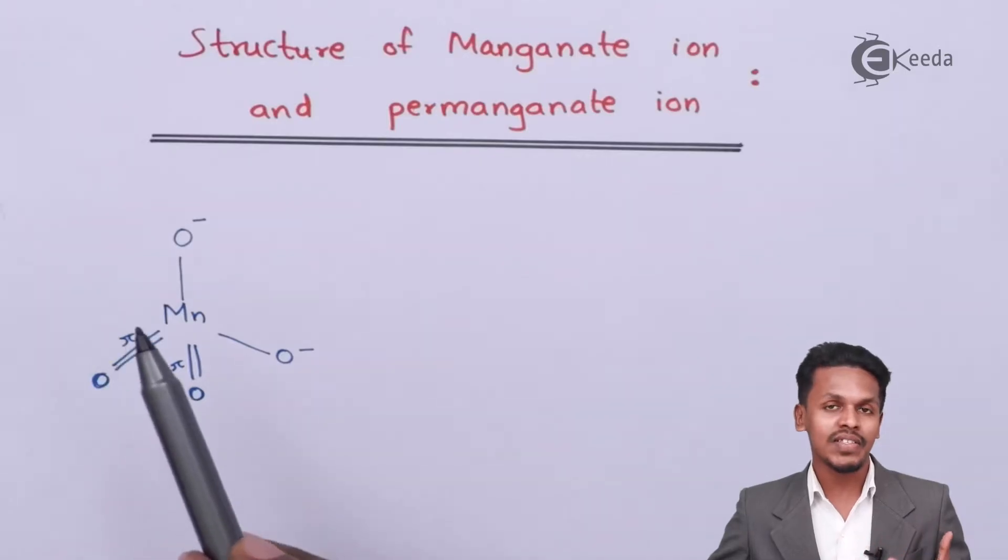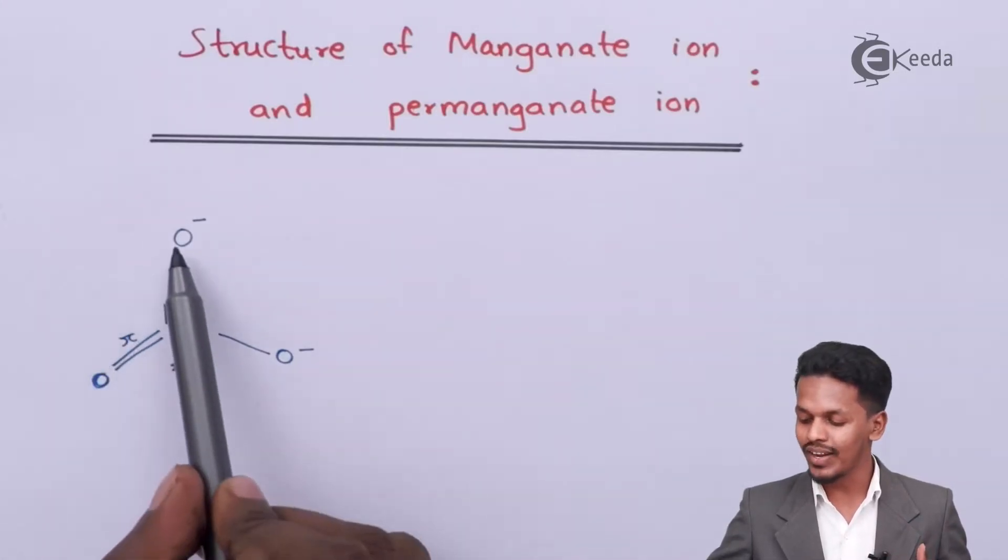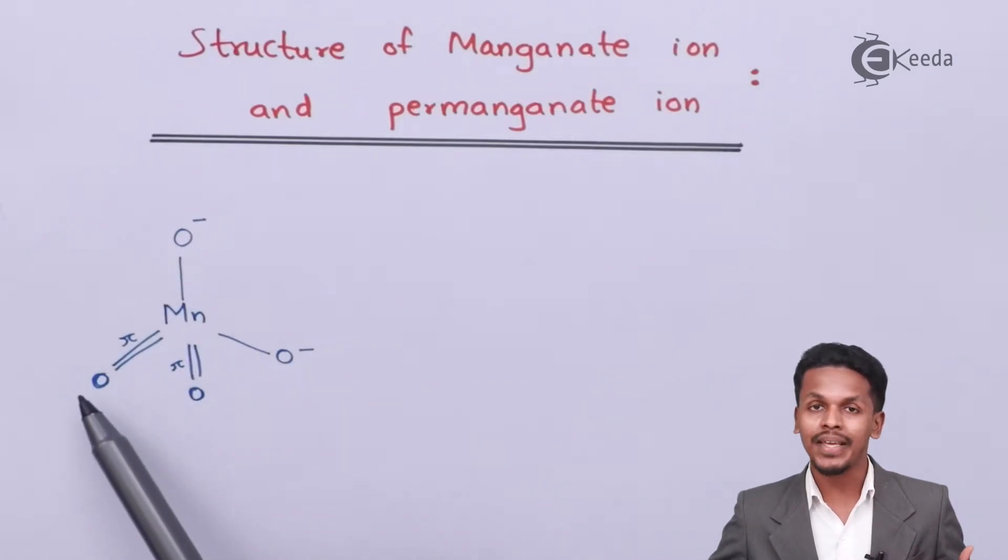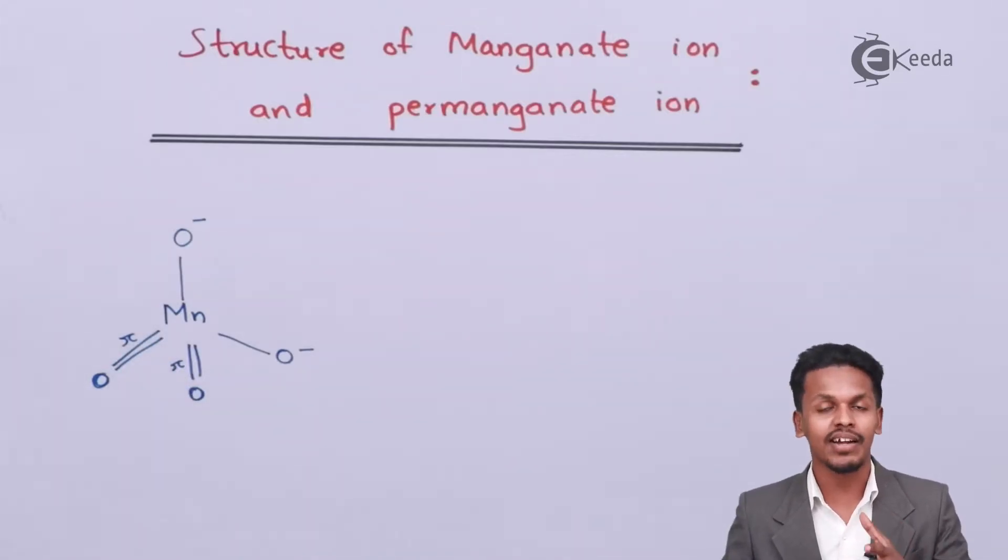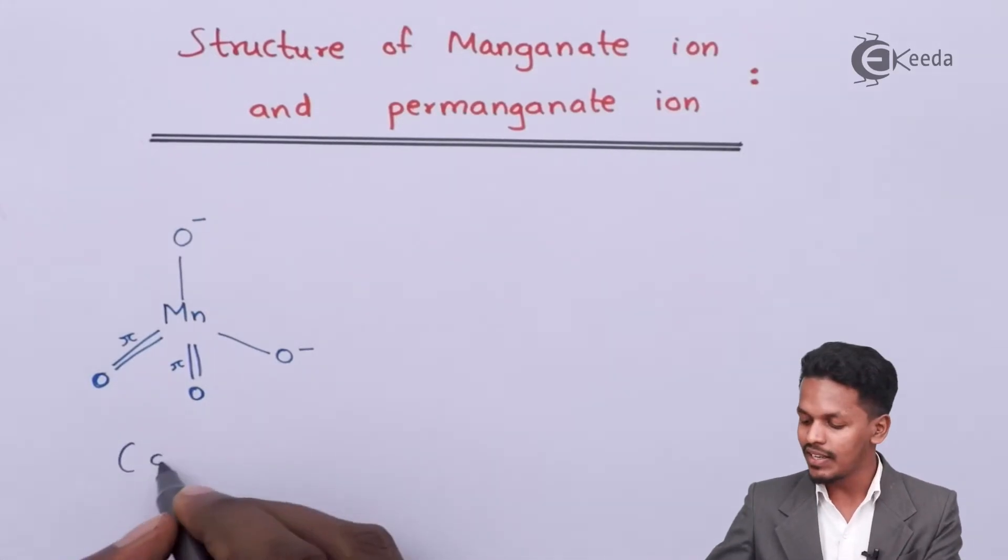Talking about this structure, it is a tetrahedral geometry. This oxygen atom and this oxygen atom will both be on the plane, while one of them would be above the plane and one will be below the plane, making a tetrahedral structure just like a pyramid. Talking about the color, the manganate ions are basically green in color.